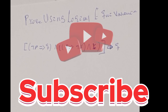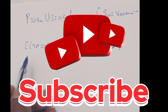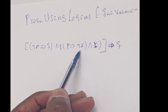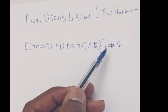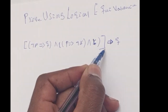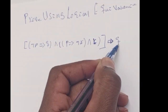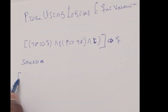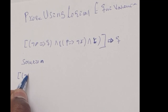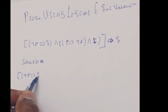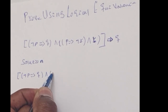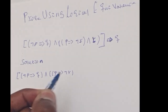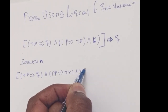Proof using logical equivalency. The problem is: negation of (P implies Q) and (P implies negation R) and R — the whole implies Q. As you can see, it is by negation. Solution: negation of (P implies Q) and (P implies negation R) and R, implies Q.